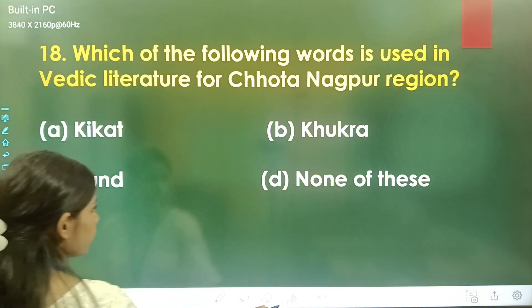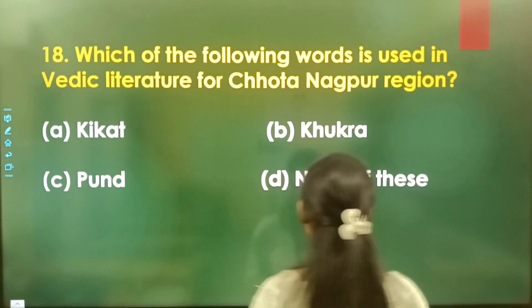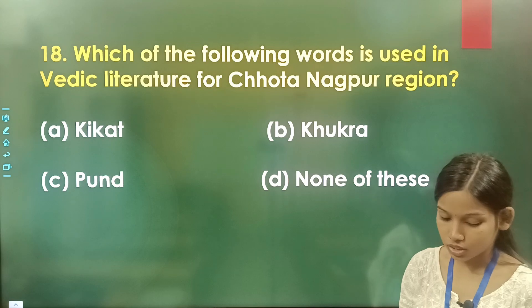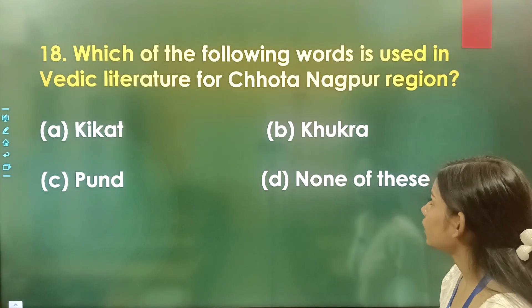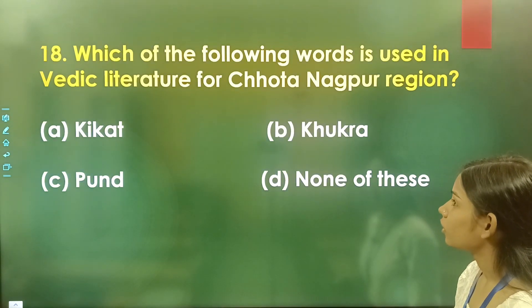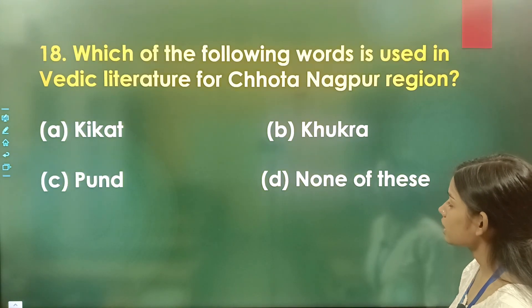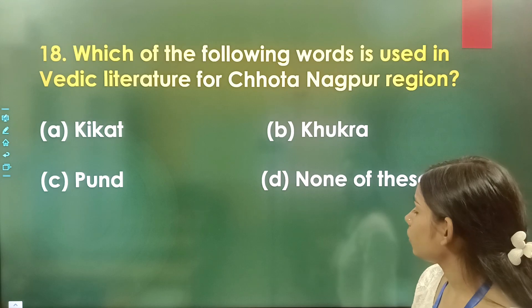Question number 18: Which of the following words is used in Vedic literature for the Chhota Nagpur region? Option A is Kekat, option B is Khukra, option C is Pund, and option D is none of these. The correct answer is option B, Khukra.